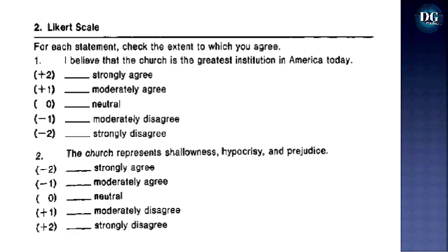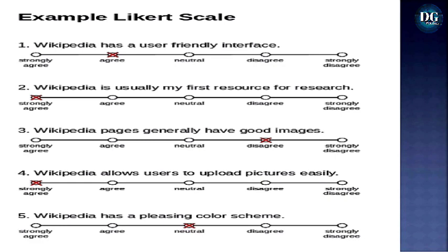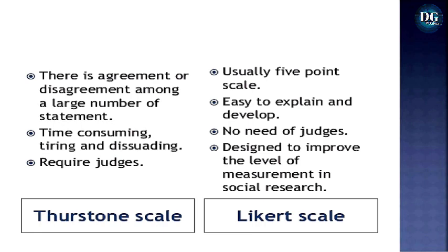An example Likert scale includes statements like: 'Wikipedia has a user-friendly interface,' and 'Wikipedia is usually my first resource for research' (strongly agree). Comparing Thurstone and Likert scales: Thurstone uses agreement/disagreement with statements, while Likert uses a five-point scale. Thurstone is time-consuming, tiring, and requires judges; Likert is easy to develop and explain, requiring no judges. Likert is designed for measuring level of measurement in social research.